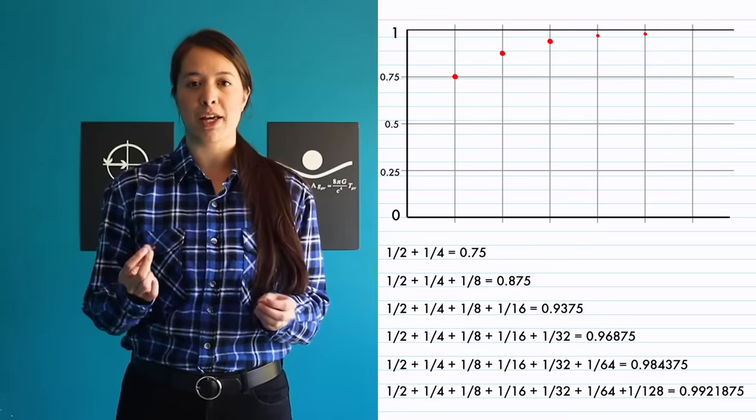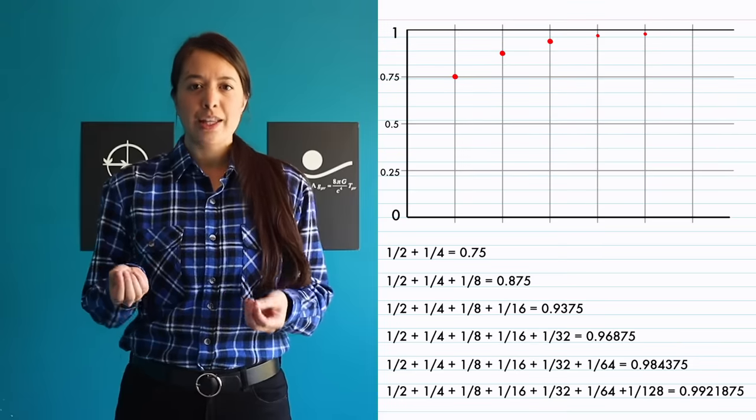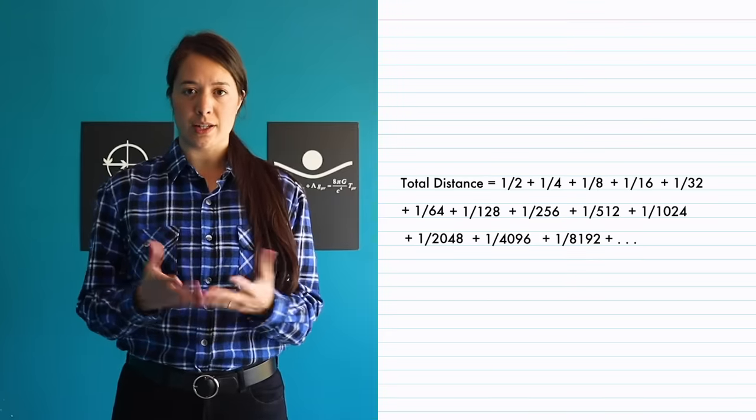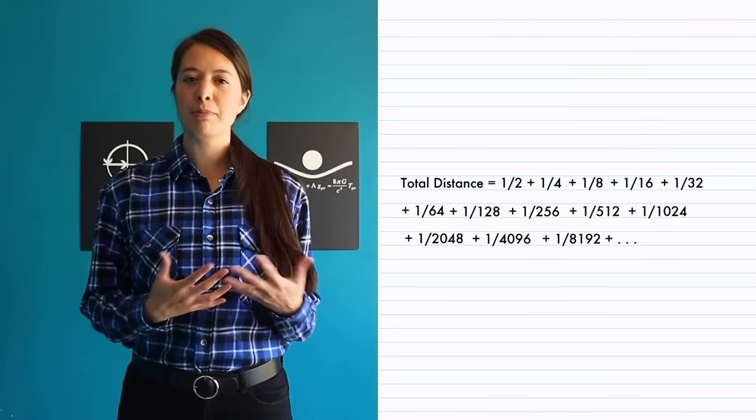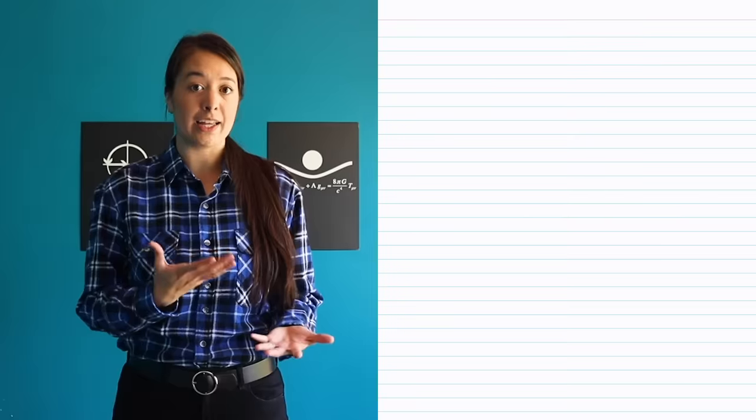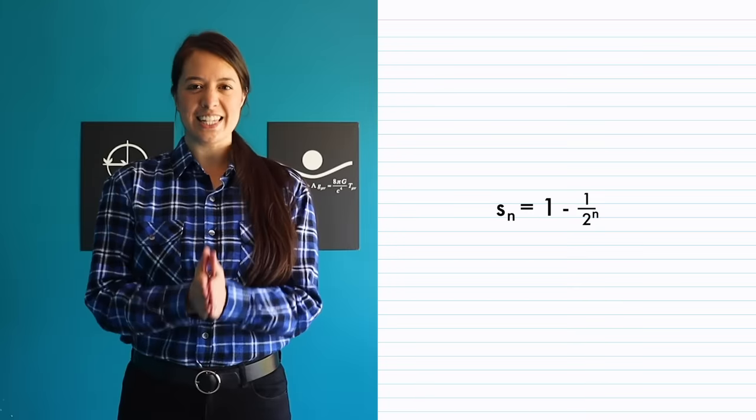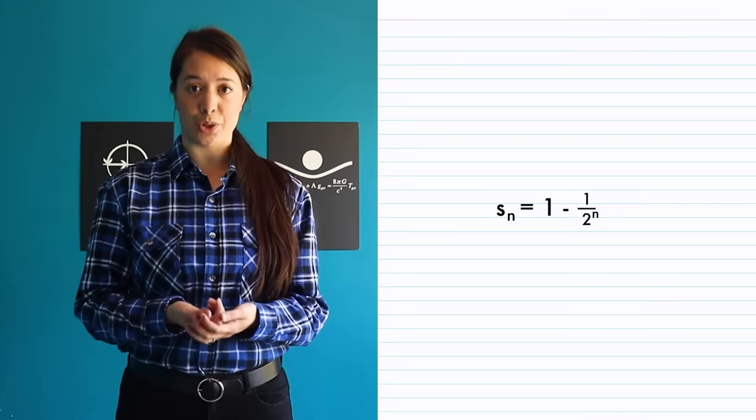To help us understand what the mathematical limit really means, let's rewrite the problem a little. We've been writing our total distance as a sum like this, but it can be written much more conveniently like this. Here's the derivation if you're interested. Written like this, this sum is much easier to work with.